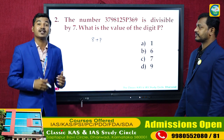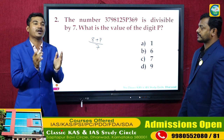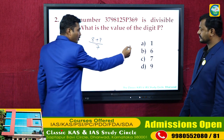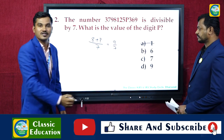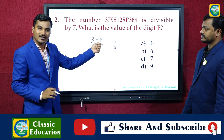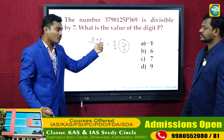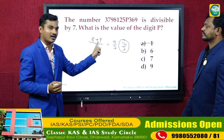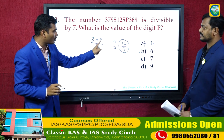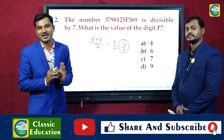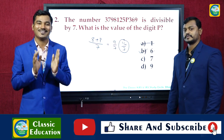Since the number is completely divisible by 7, (8 + P) must be divisible by 7. Testing options: P=1 gives 9 (not divisible); P=6 gives 14, which is divisible by 7; P=7 gives 15 (not divisible); P=9 gives 17 (not divisible). So P = 6 is the answer. Using the digit sum method, this can be solved within 30 seconds instead of the lengthy substitution approach.